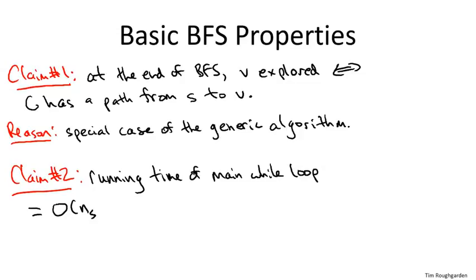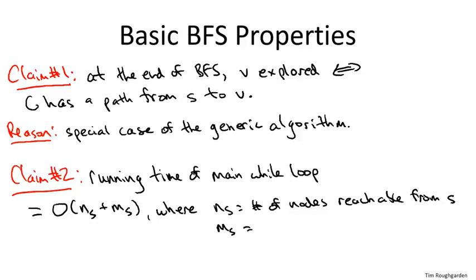Claim number two is that the running time is exactly what we want. I'm going to state it in a form that will be useful later when we talk about connected components. So the running time of the main while loop, ignoring any kind of preprocessing or initialization, is proportional to what I'm going to call NS and MS, which is the number of nodes that can be reached from S and the number of edges that can be reached from S. And the reason for this claim becomes clear if you inspect the code, which we'll do in a second.